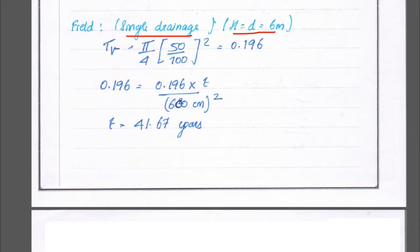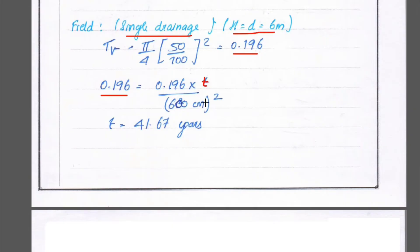For single drainage in the field, H = D = 6 meters = 600 centimeters. Using TV = π/4 × (50/100)² = 0.196, and substituting into TV = CV × T / D²: 0.196 = 0.196 × T₅₀ / (600)². Solving this, we get T₅₀ = 41.67 years for 50 percent consolidation under single drainage field conditions.